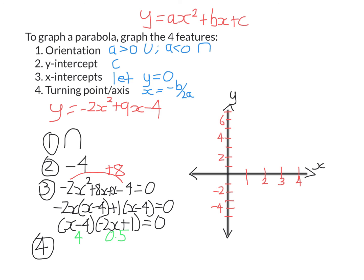All right, final step. I can find the turning point and axis of symmetry using this formula: x equals negative b divided by 2a. Here b is 9, and 2 times a is negative 4. This means the turning point occurs at x equals 2.25, which is also the axis of symmetry.